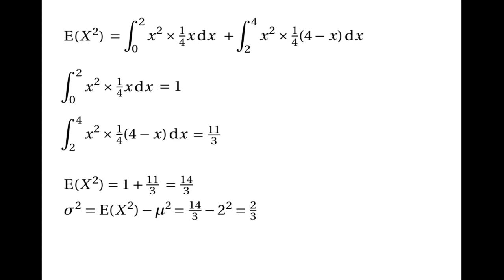The question asks for the standard deviation, not the variance. We find the standard deviation by square-rooting the variance, so it's equal to √(2/3), which is approximately 0.816 to three significant figures.